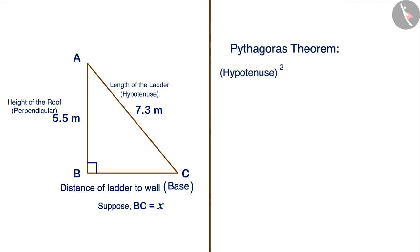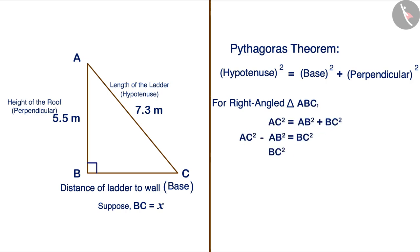According to the Pythagoras theorem, the square of the hypotenuse is equal to the sum of the squares of the base and the perpendicular. For the right angle triangle ABC, we can write. We can also write it like this. Substituting the value of all the sides, we get x square is equal to 23.04. But we have to find the value of x. For this, we have to find the square root of the number 23.04.